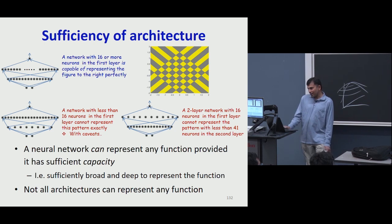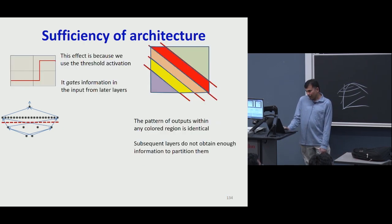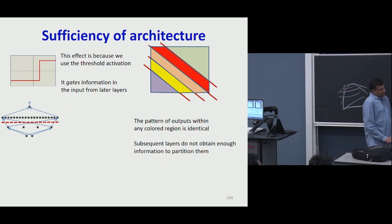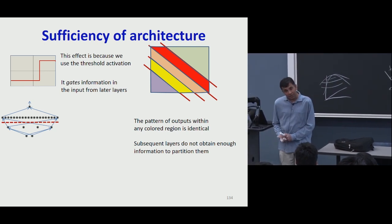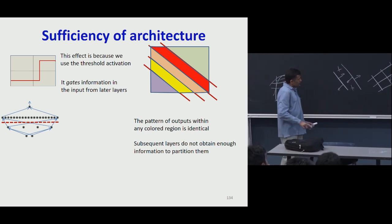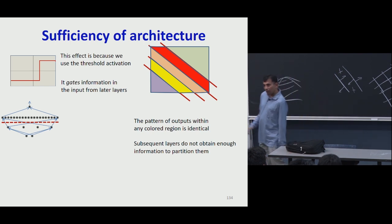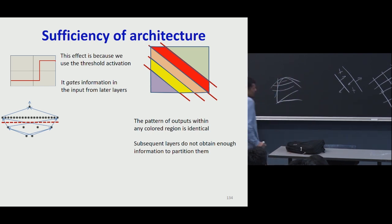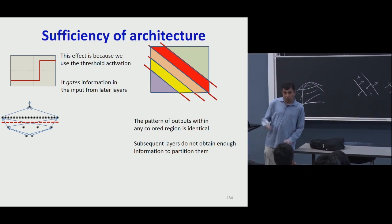We've been assuming threshold activations, and one property of threshold activations is that they lose information — once you cross the threshold, it doesn't tell you how far you are from it. This is why we worry about different kinds of activations. If I had only eight neurons in the first layer but the activations were not threshold activations — if they had some way of telling you how far away you are from the line — then could I construct the rest of the pattern downstream? Yes, because the information would still be there.